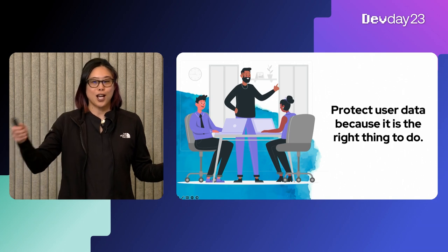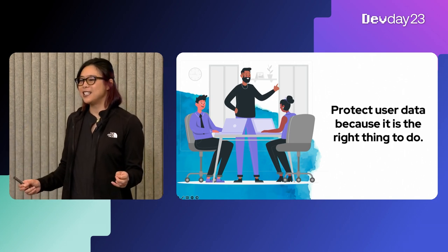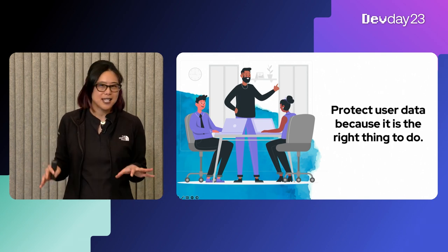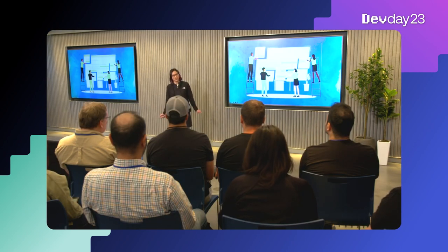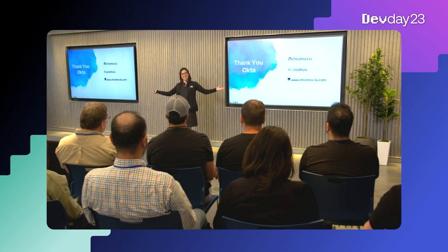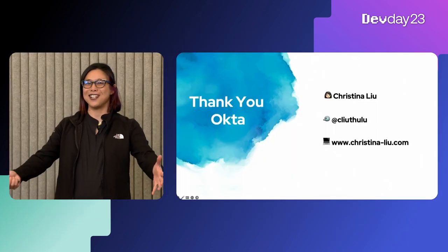The code that you write has a human impact, even if at the surface level it doesn't seem that way. We as software engineers are the stewards of our users' data. It's important to know how our users are expecting us to protect their identity — because it's the right thing to do, even if it takes a little bit more time or effort to build. At the end of the day, I know that you would want the company responsible for your PII to also be taking the utmost care and consideration and do the right thing too. Again, I am Christina Liu. Thank you so much to Okta and everyone watching.